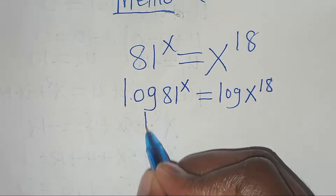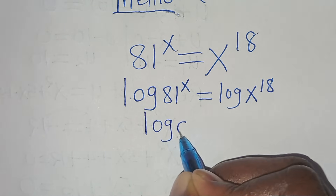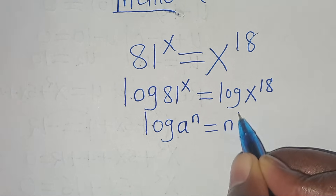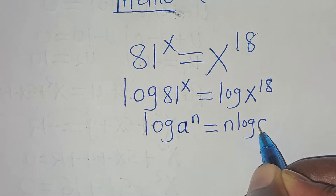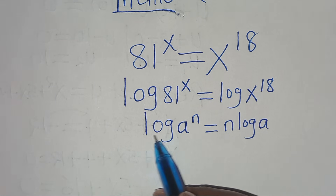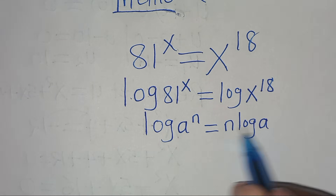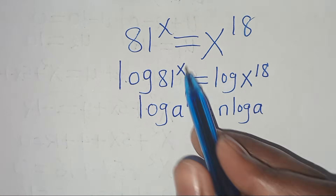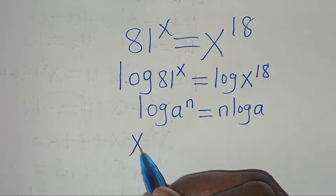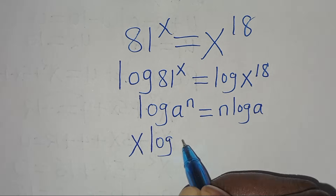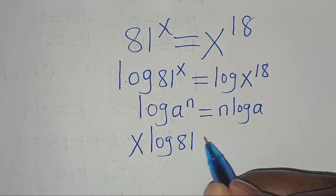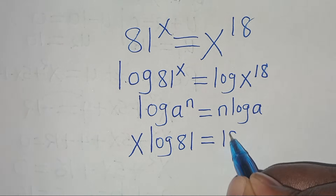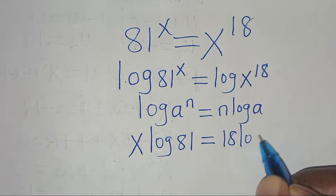Now we have log 81 to the power of x and log x to the power of 18. This is in the form of log a to the power of n, which we can express as n log a. Let's apply this power property of logarithm so that now log 81 to the power of x becomes x log 81, and this is equal to 18 log x.